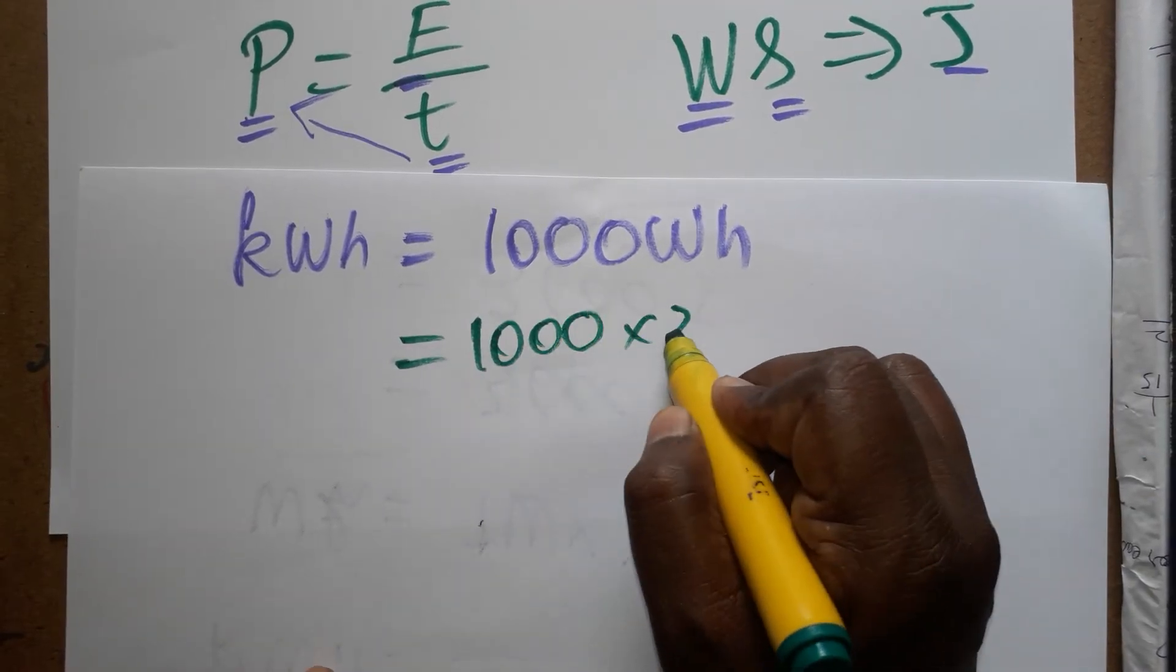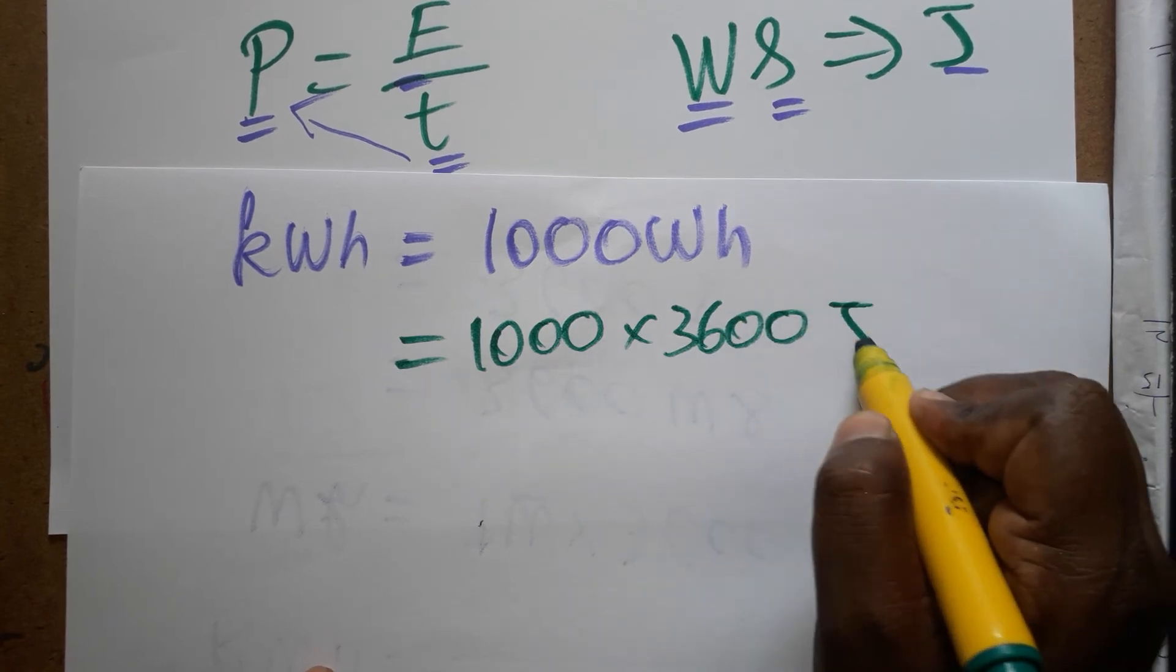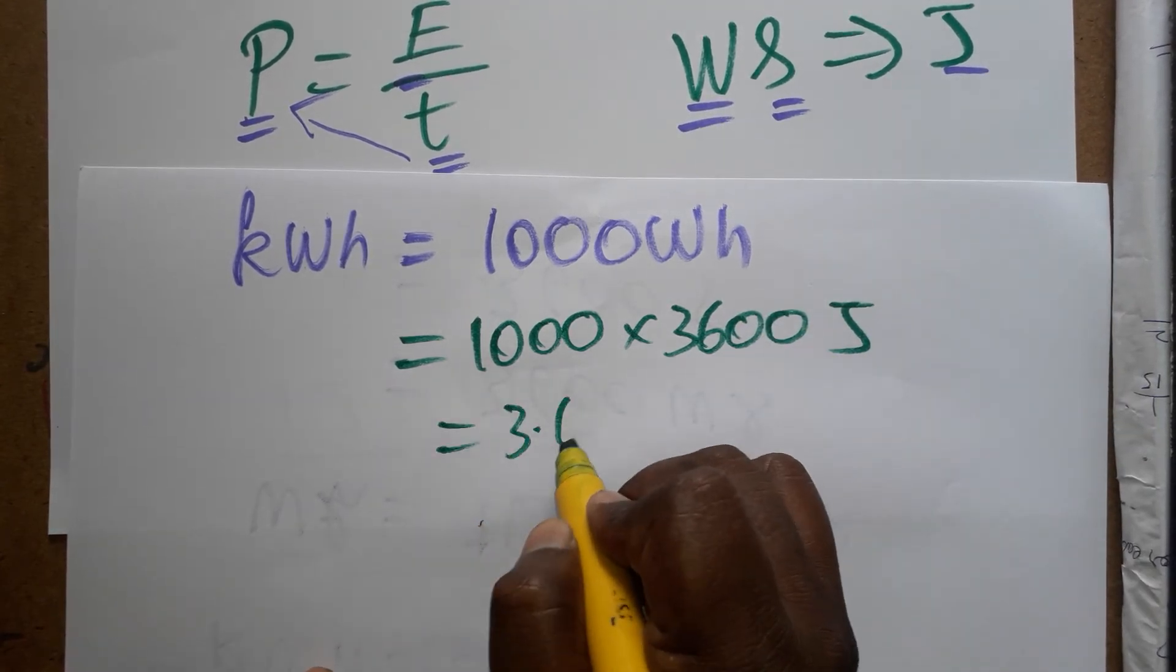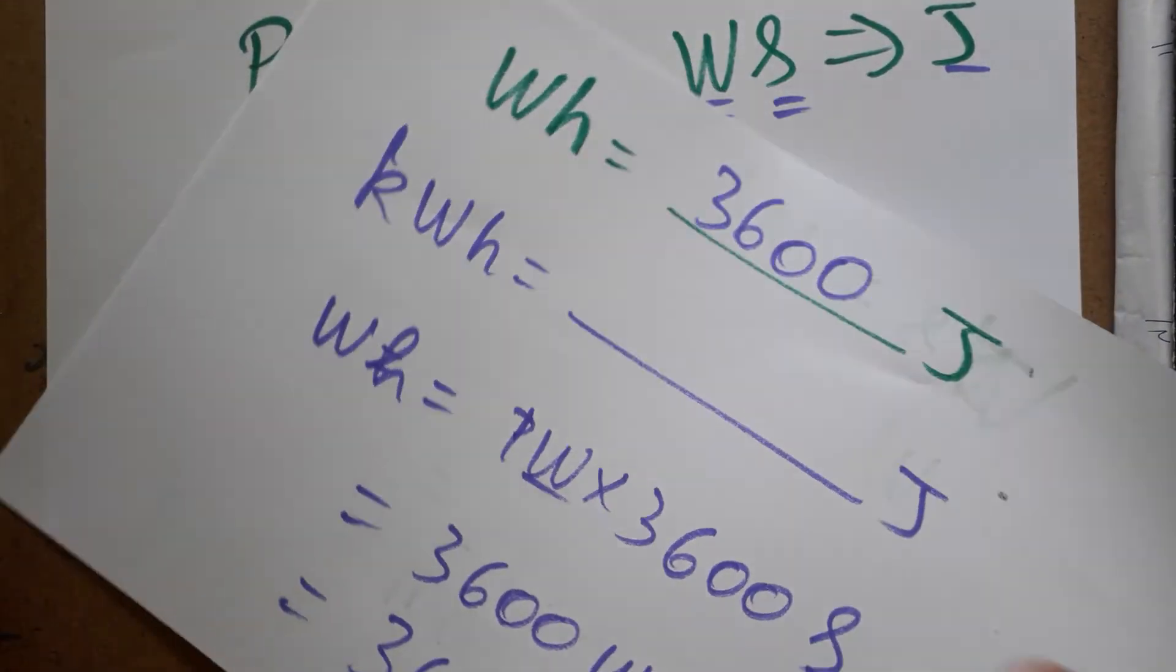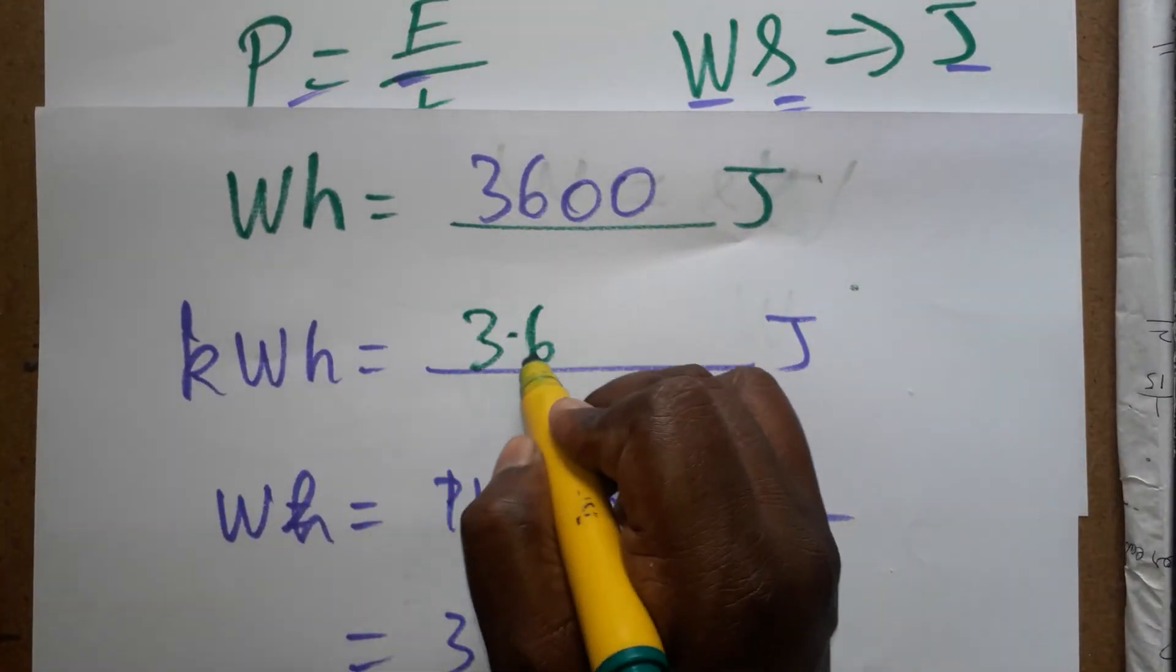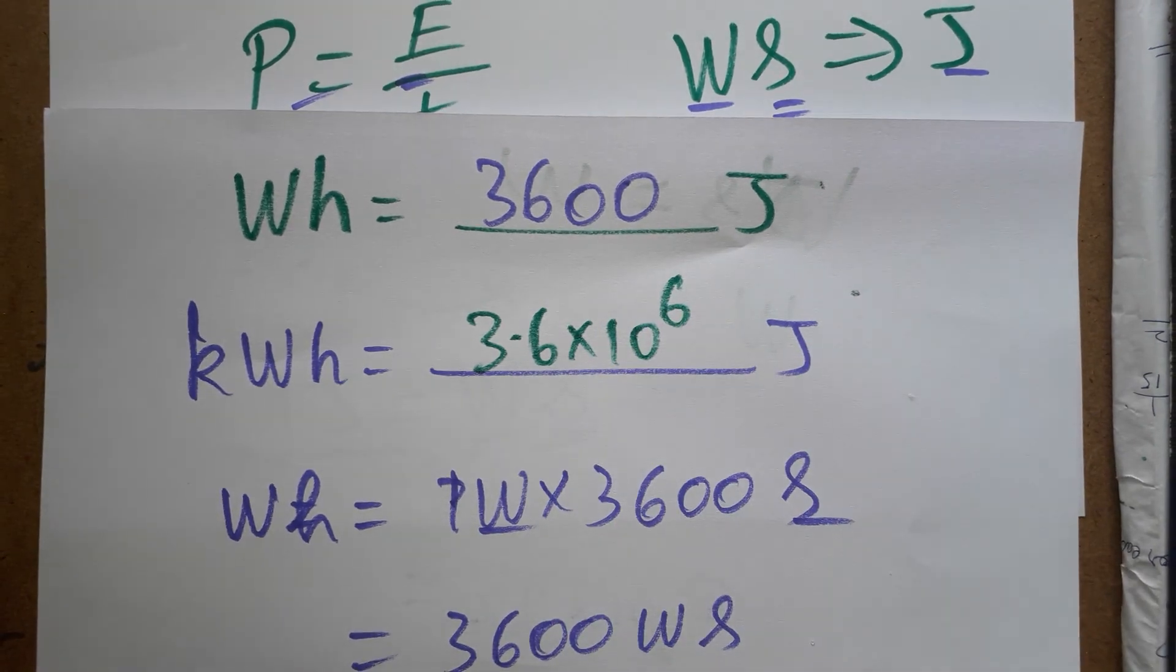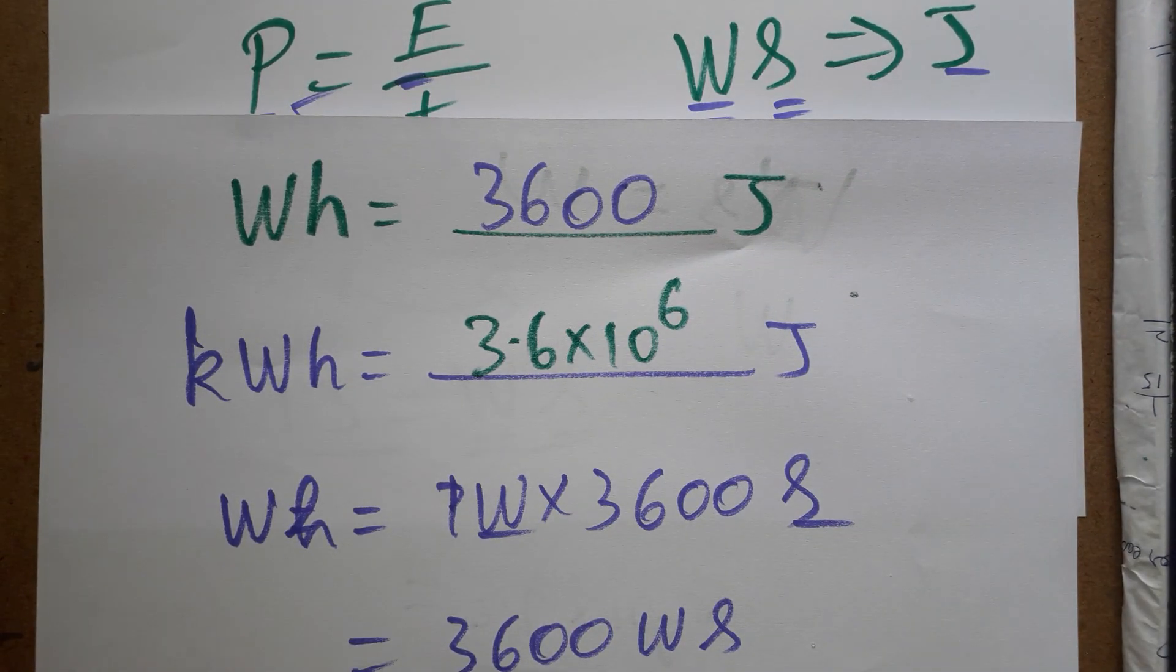So thousand into 3600 joules, so this value is 3.6 into 10 power 6 joules. So this also we got, one kWh is 3.6 into 10 power 6 joule.